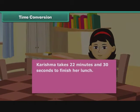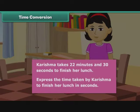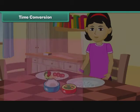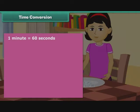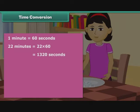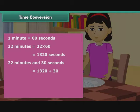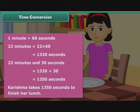Karishma takes 22 minutes and 30 seconds to finish her lunch. Express the time taken by Karishma to finish her lunch in seconds. 1 minute is equal to 60 seconds. 22 minutes is equal to 22 into 60, which equals 1320 seconds. 22 minutes and 30 seconds is equal to 1320 plus 30, which equals 1350 seconds. Karishma takes 1350 seconds to finish her lunch.